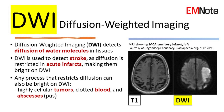Diffusion Weighted Imaging, DWI, is a sequence that detects the diffusion of water molecules in tissues. DWI is used to detect stroke, as diffusion is restricted in acute infarcts, making them bright on DWI. However, any process that restricts diffusion, such as highly cellular tumors, clotted blood, and pus under pressure, can also be bright on DWI. DWI is also used to detect other pathologies such as abscesses, epidural hematomas, and tumors.